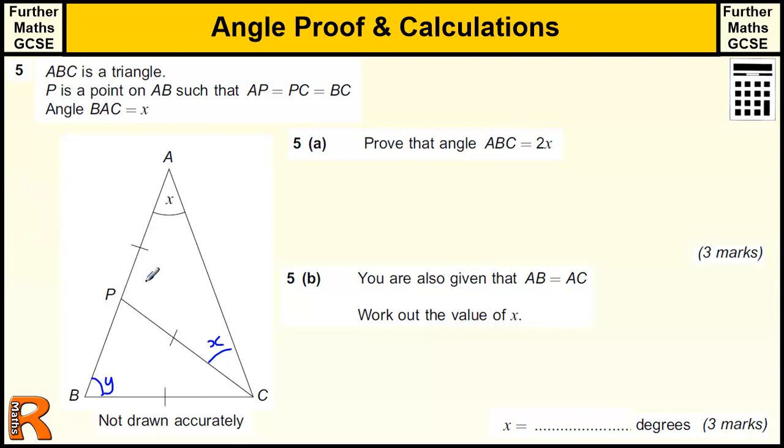And that tells us that this angle here is 180 minus 2X because the angles in a triangle add up to 180. So this angle here is going to be 180 because it's a straight line minus 180 minus 2X. So that's going to be 2X. And because that's isosceles, that makes that 2X.